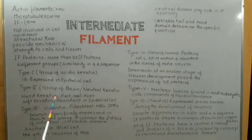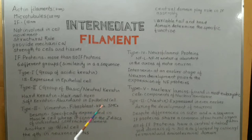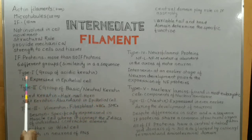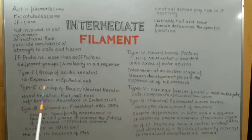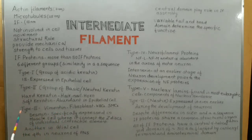Hard keratins are the components of hair and nail, whereas soft keratins are abundant in epithelial cells. In epithelial cells, at least one type of Type 1 intermediate filament protein and one type of Type 2 intermediate filament protein are co-polymerized to form the intermediate filament.